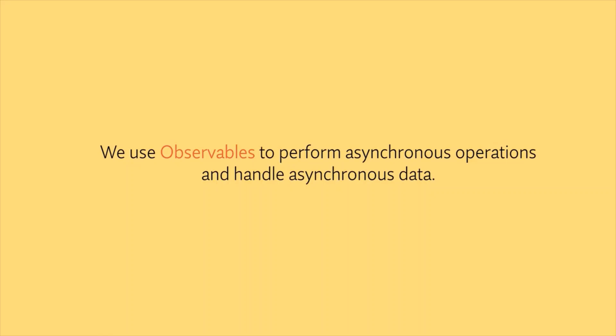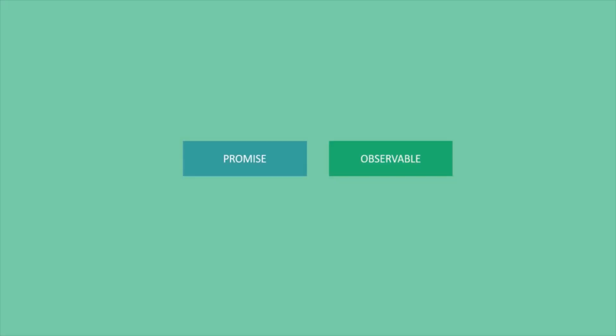Another way of performing asynchronous operations in JavaScript and handling asynchronous data is by using promises. So we can handle asynchronous operations in Angular using either promises or observables. Now, what is asynchronous operation and asynchronous data?